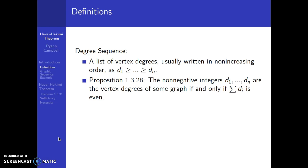Proposition 1.3.28 states that the non-negative integers d1 through dn are the vertex degrees of a graph if and only if the sum is even. We know that the degree sum has to be even in order for everything to fit on a graph.